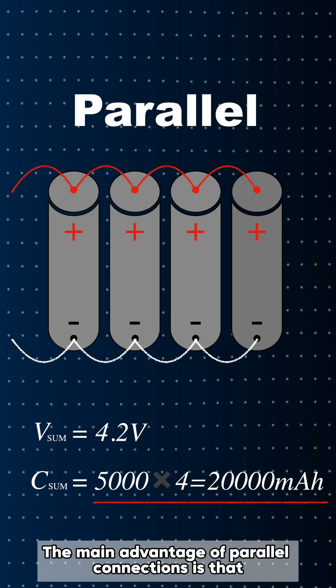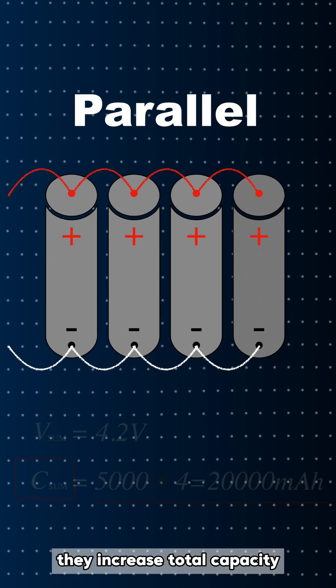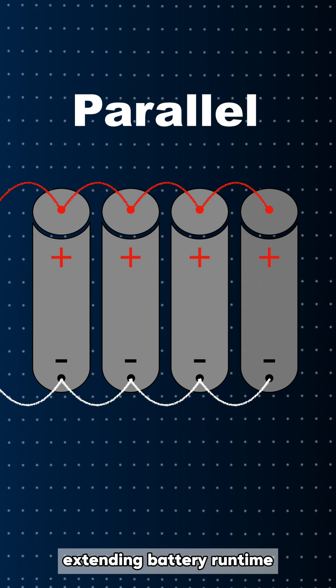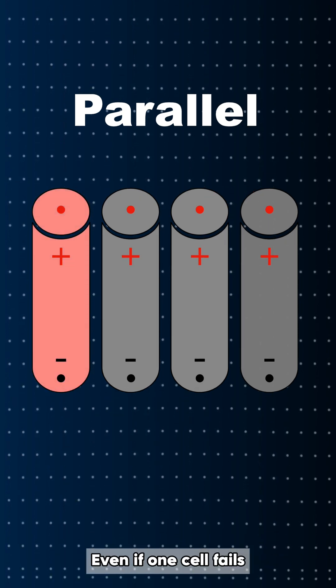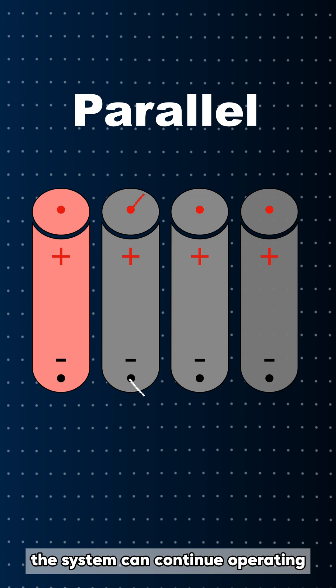The main advantage of parallel connections is that they increase total capacity, extending battery runtime. Even if one cell fails, the system can continue operating.